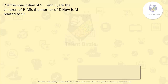Now let's check this question related to the blood relation topic. P is the son-in-law of S. T and Q are children of P. M is the mother of T. How is M related to S? Let me draw a diagram. P is the son-in-law of S, which means P is the husband of the daughter of S.